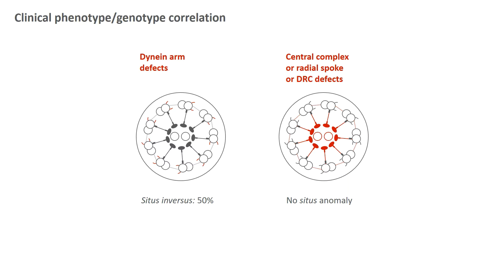Even if you do not have access to specific investigations such as high-speed video microscopy or transmission electron microscopy, there are simple things you can check — for example, the existence or not of situs inversus. We know that patients with mutations in genes encoding for dynein arms have situs inversus in half of cases. On the contrary, patients with mutations in genes encoding for central complex, radial spokes, or DRC components never have a situs anomaly.